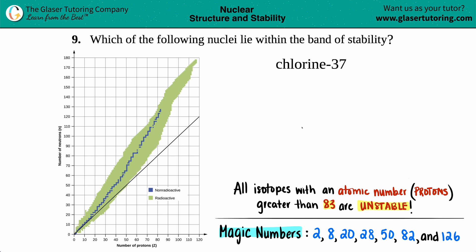Number nine: which of the following nuclei lie within the band of stability? We have chlorine-37. Here I have a picture of the band of stability which shows your stable isotopes and your unstable ones.